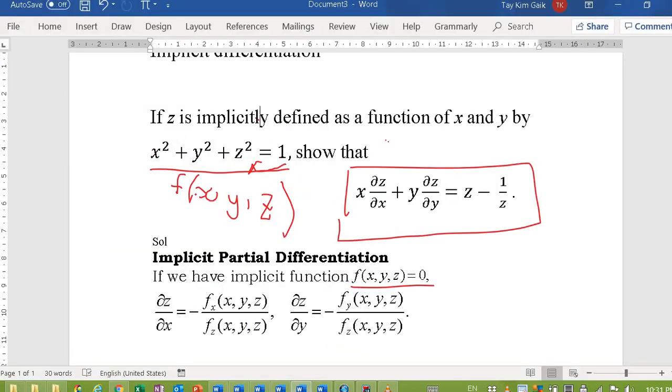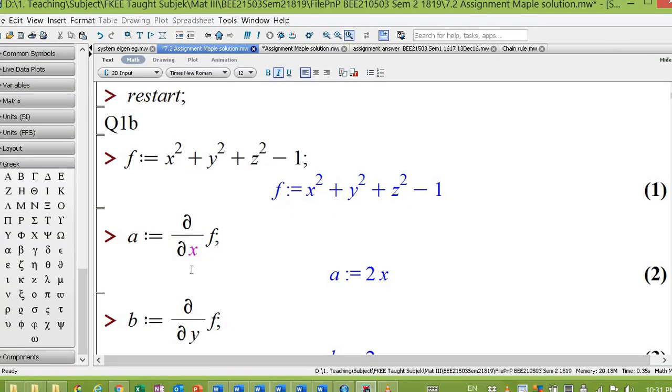And then you need to find from the f here, find fx, fy, fz and plug into the implicit partial differentiation formula. ∂f/∂x, I assign it as a.